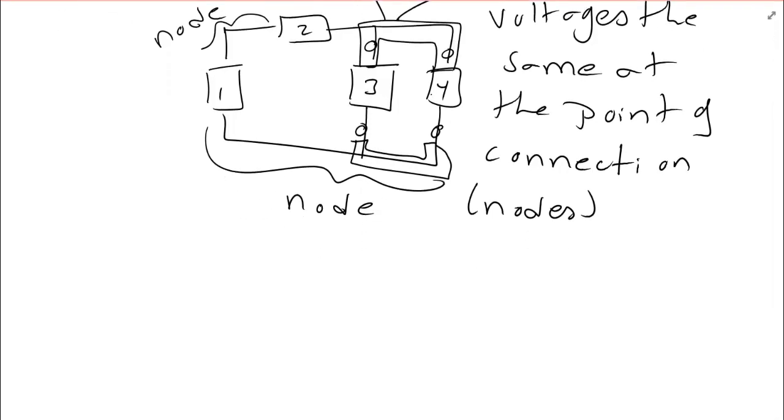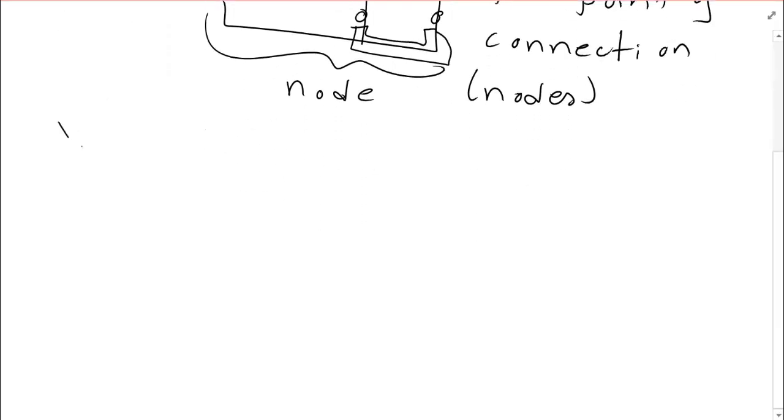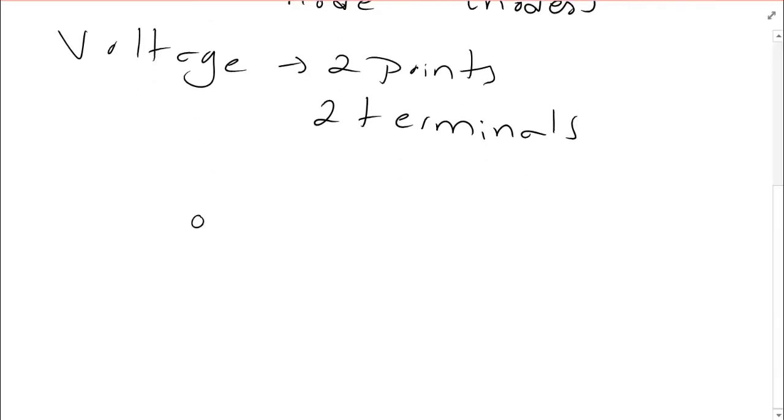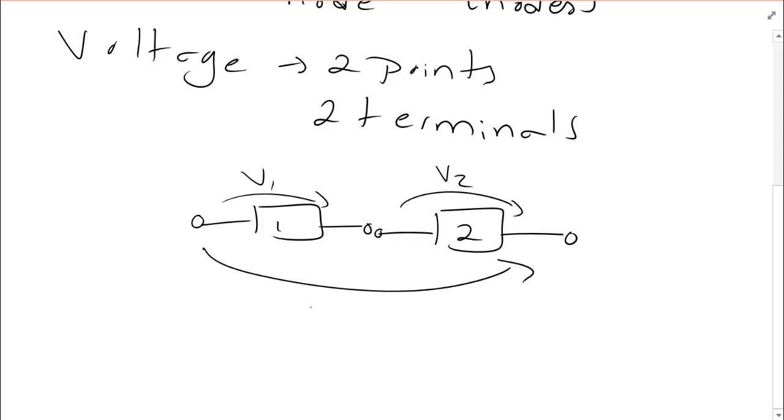Well, in order to measure voltage, we typically needed two points. Or two terminals of what we've been calling it. However, if you remember, one of the videos had two elements connected to each other. This is how I drew it in that video. And if this here was called V1, and this here was called V2, then we were able to develop a voltage here called V12, which is equal to V1 plus V2.